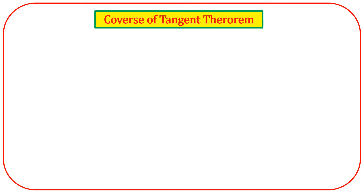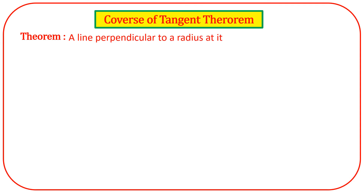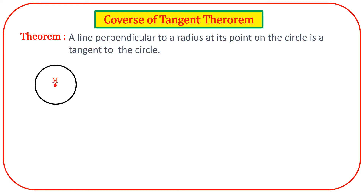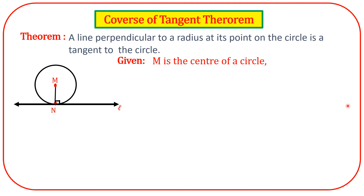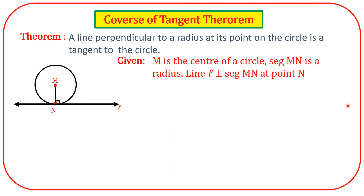Converse of tangent theorem. Here is the statement: a line perpendicular to a radius at its outer endpoint on the circle is a tangent to the circle. Here we draw a figure: a circle with center M, where MN is a radius and line L is perpendicular to radius MN. Given: M is the center of the circle, segment MN is a radius, and line L is perpendicular to segment MN at point N. To prove: line L is tangent to the circle.